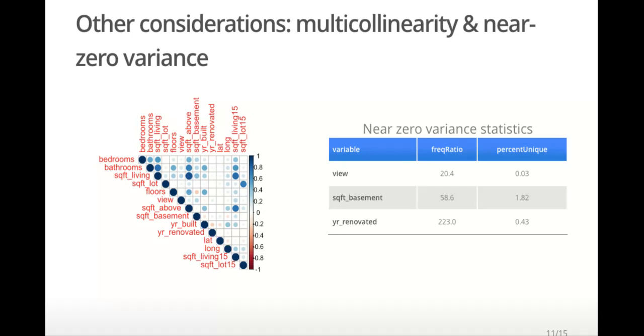The table on the right shows statistics for three variables that were flagged as near zero variance, including view. The frequency ratio gives the ratio of frequencies for the most common value over the second most common value. The percent unique is the number of unique values for that variable divided by the total number of observations times 100. So for view, there are only five unique values. If the frequency ratio is large, the default is larger than 19, and the percent unique is smaller than 10%, then the variable is flagged as a potential near zero variance variable. You may want to completely remove the variable or potentially categorize it. You'll definitely want to investigate it further.